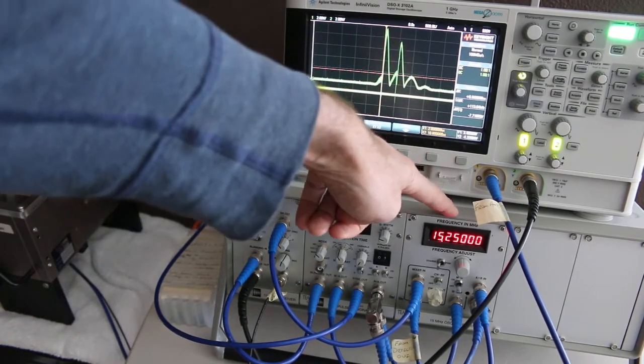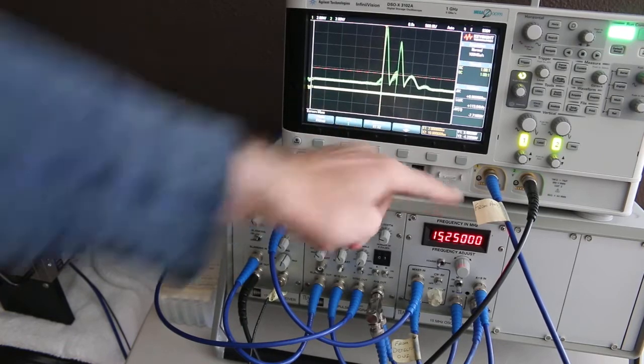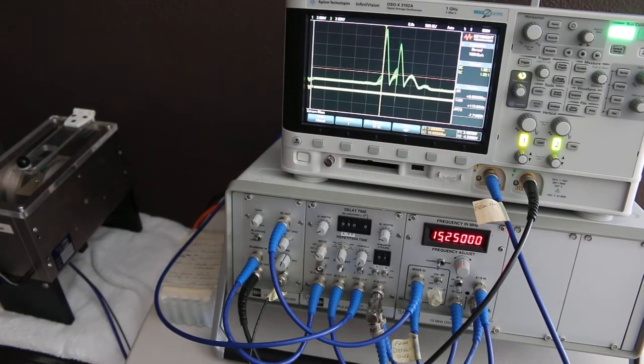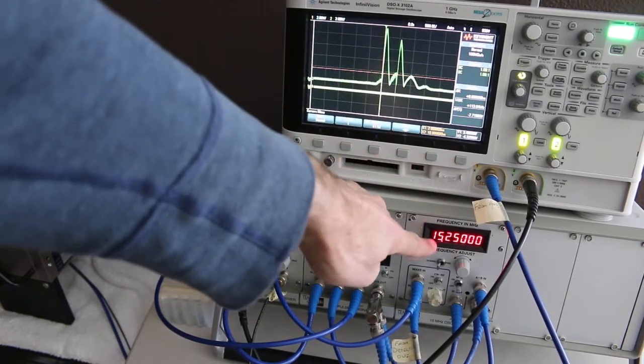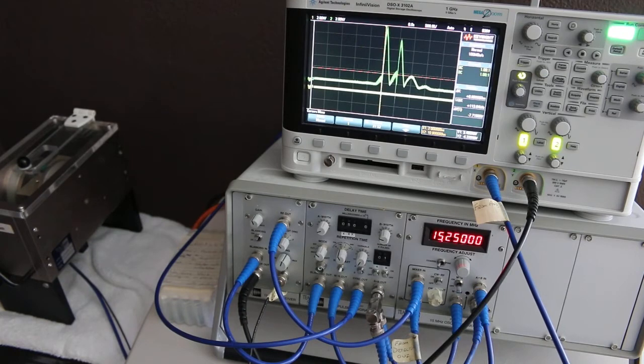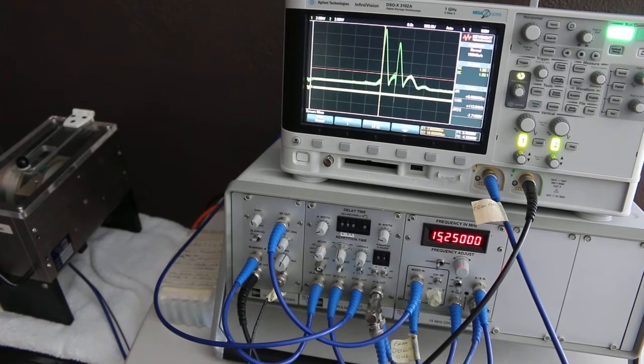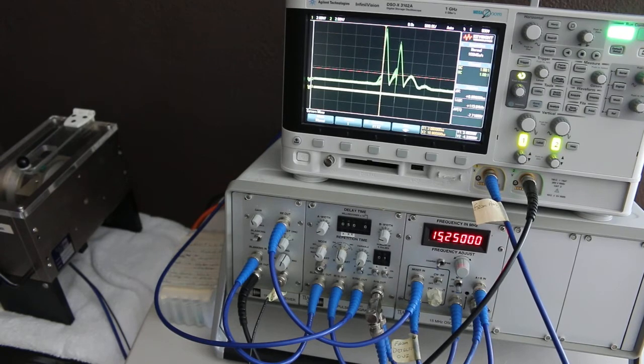The third part over here is a 15 megahertz oscillator amplifier and mixer. So being a 15 megahertz oscillator, it can generate its own frequency. And you can see I have about 15.25 megahertz adjusted on it right here at the moment. So it's putting out a 15.25 megahertz radio frequency.